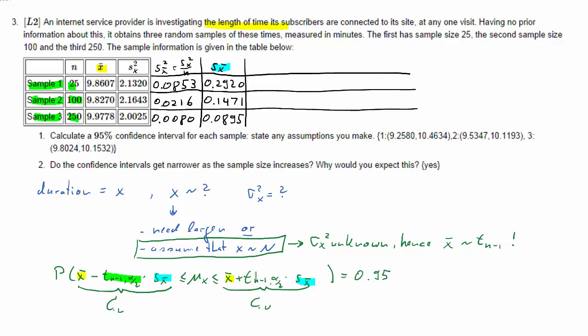So now we've got the S X bar, we actually already know the X bar, so the only thing we are missing to calculate the confidence interval is this value from the t distribution. That of course depends on the sample size, so that will be a different value for each of the three samples. And we want the value of the t distribution that cuts off alpha over two percent of the distribution, so that cuts off two and a half percent in the distribution. And you can go to the t table to confirm that these are the respective values.